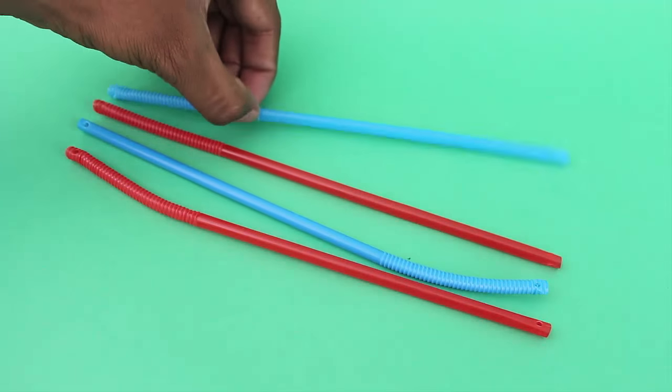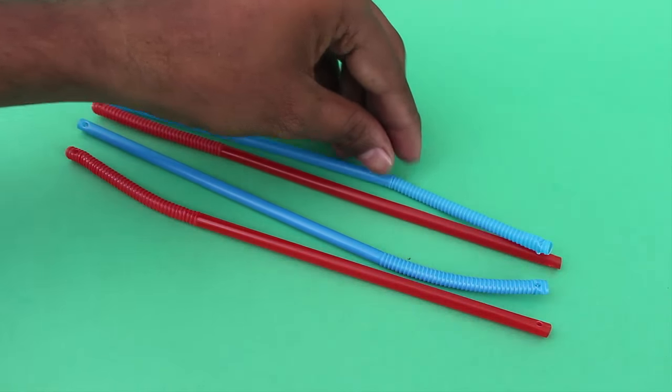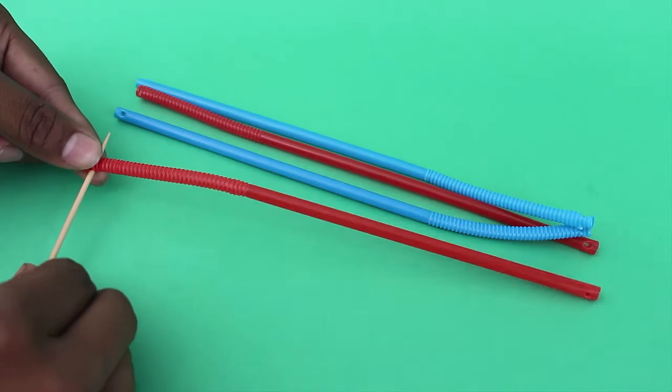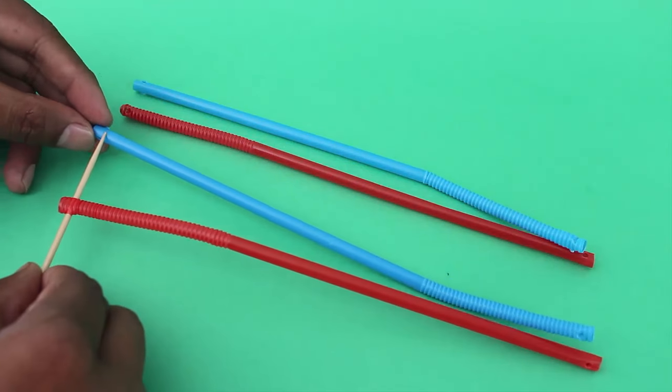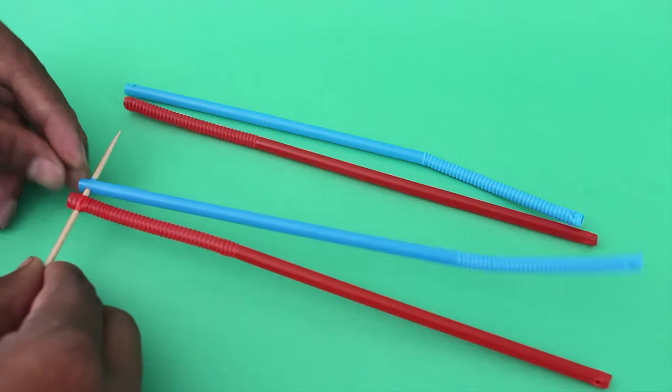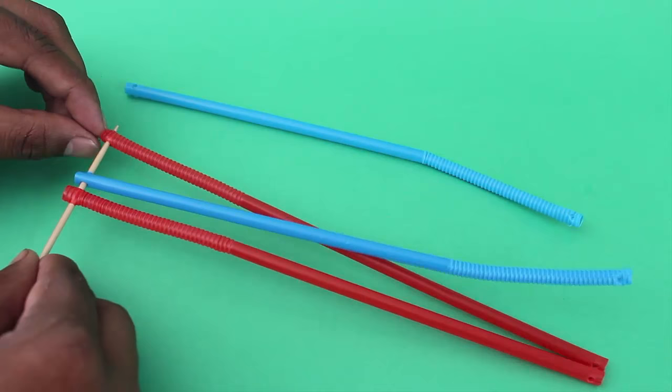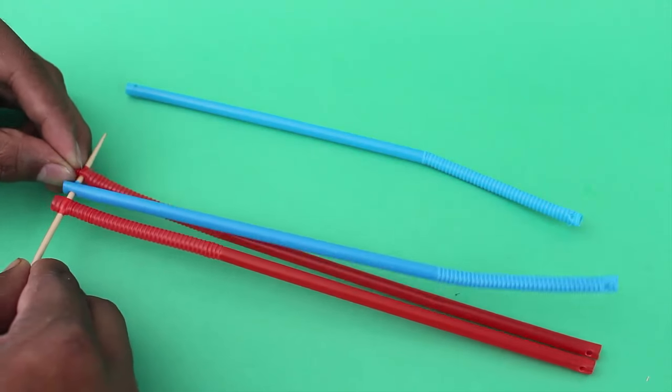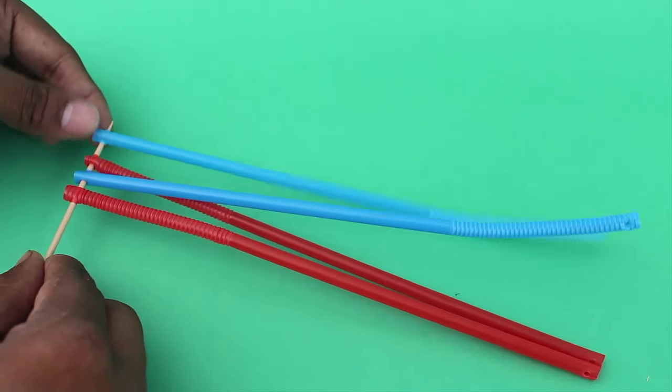Then place the four straws with the colors alternating in the orientation shown. The crimps of the red straws should be to the right and of the blue straws to the left. Now weave the left ends of all straws in one toothpick.